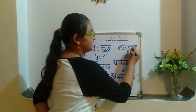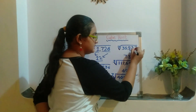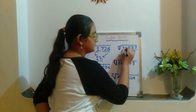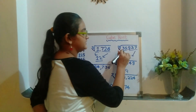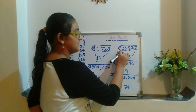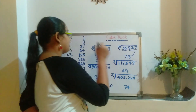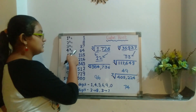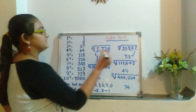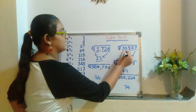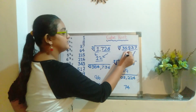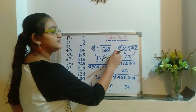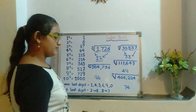Now we will ignore the last 3 digits and concentrate on the leftover digit which is 35. As 35 is greater than 27, so we will write 3 here, as we have to write the cube of the number lesser than 35. So the answer is 33.